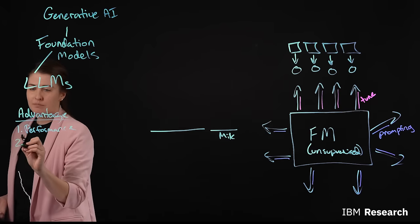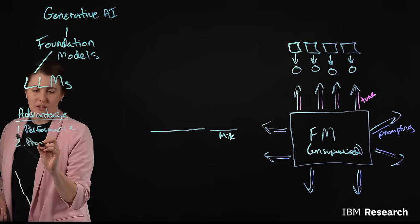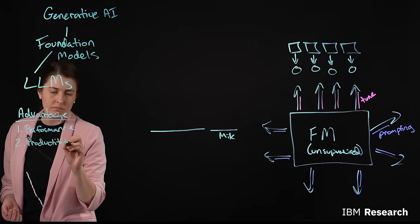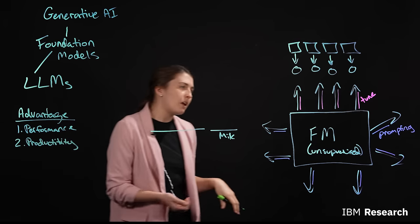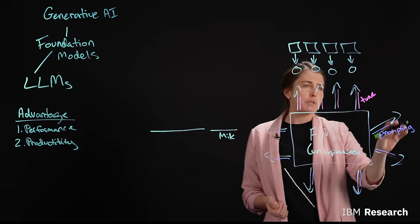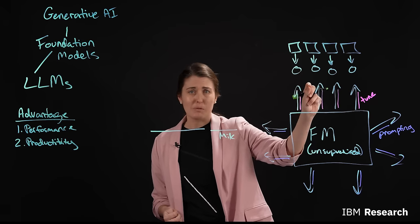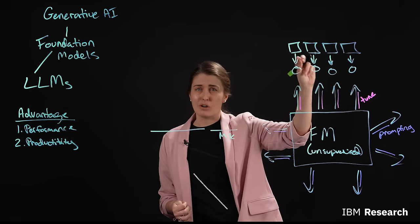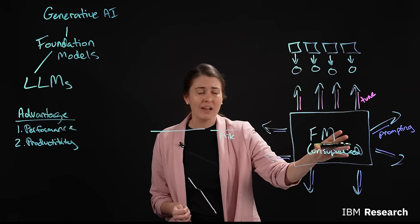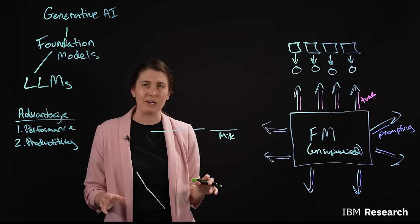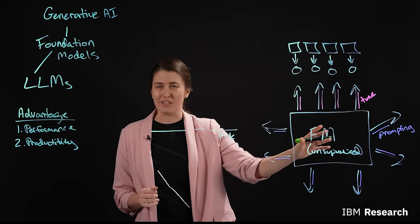The second advantage of these models are the productivity gains. So just like I said earlier, through prompting or tuning, you need far less labeled data to get to a task-specific model than if you had to start from scratch, because your model is taking advantage of all the unlabeled data that it saw in its pre-training when we created this generative task.